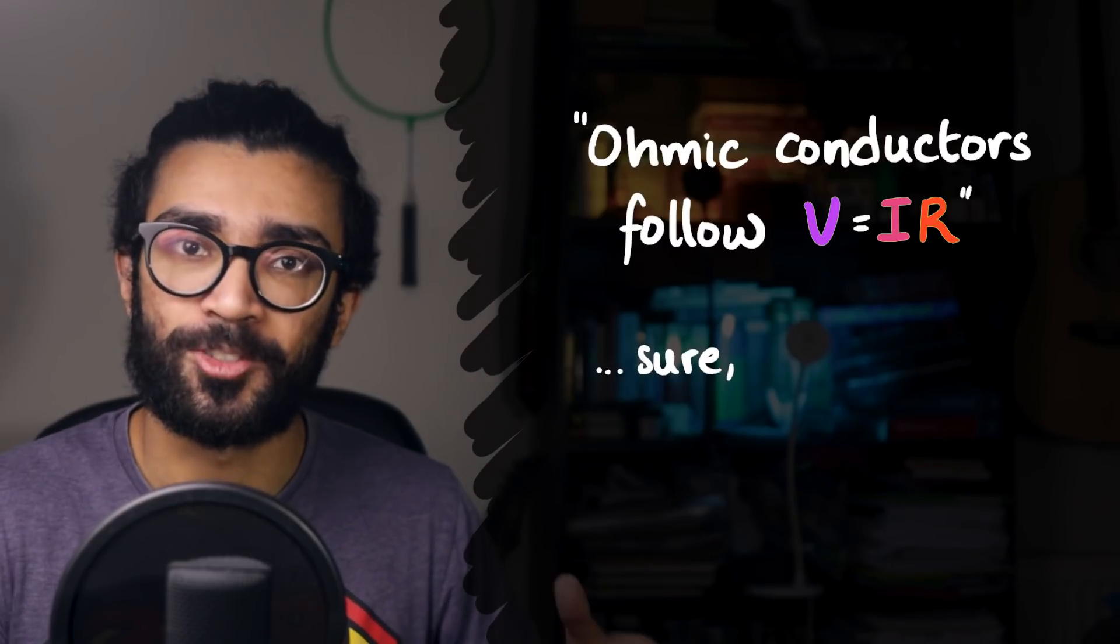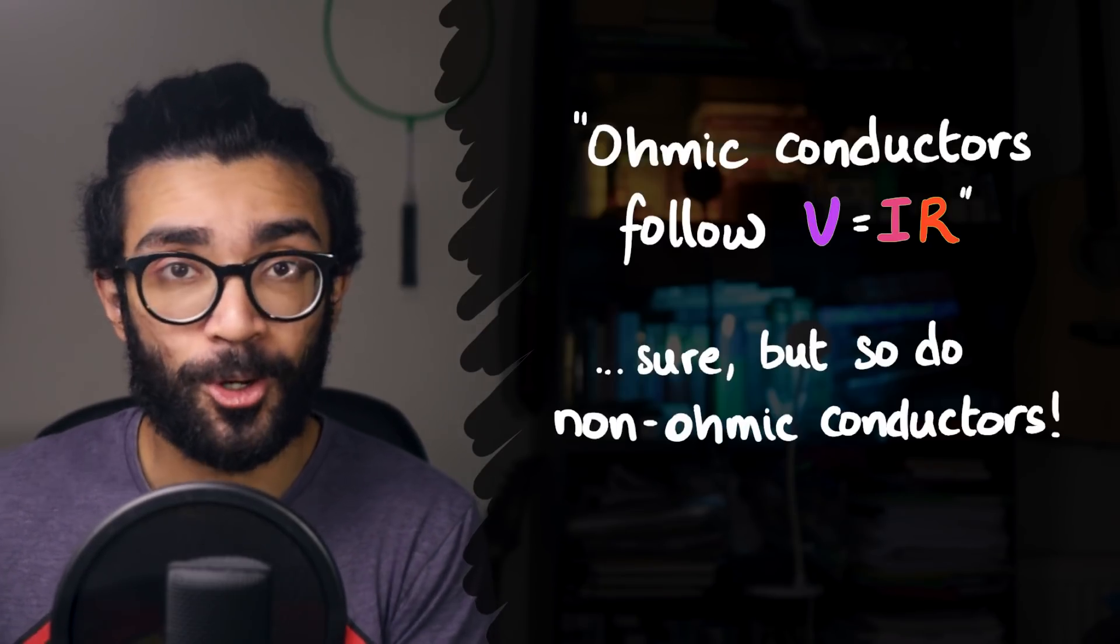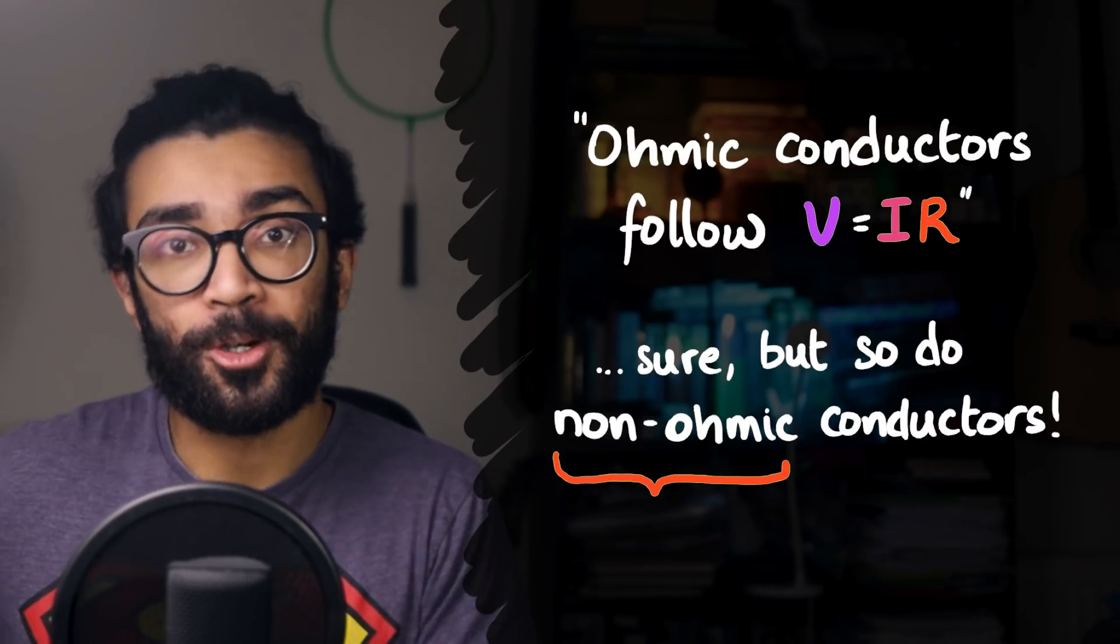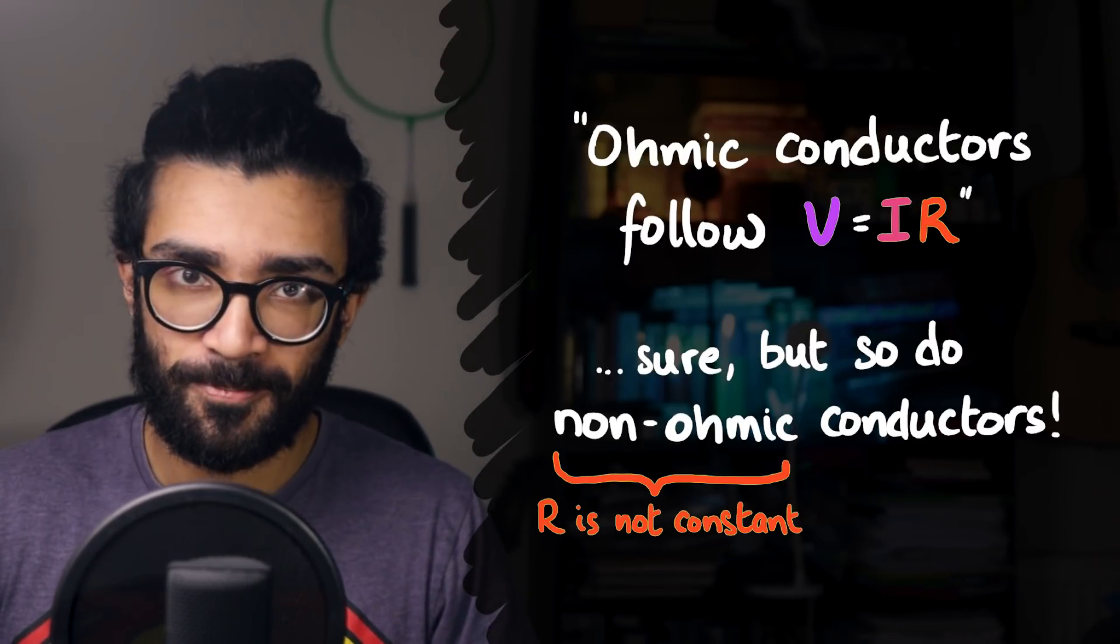This is the major problem with saying that ohmic conductors are defined by the equation V equals IR. Sure, ohmic conductors do follow the equation V equals IR, but so do non-ohmic conductors. It's just that for those conductors, R is not constant.